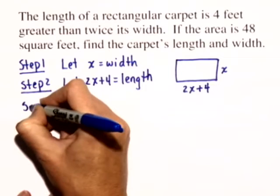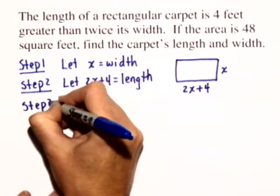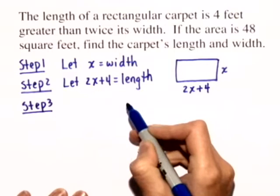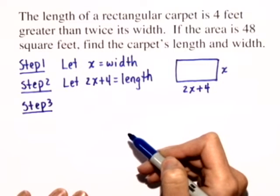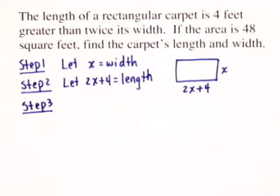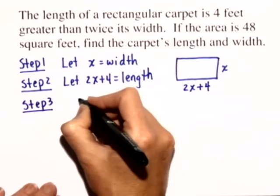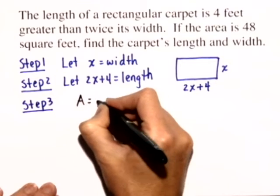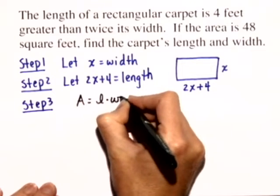Now in step 3, we want to write an equation relating these two quantities in steps 1 and 2. We're told that the area is 48 square feet. The area of any rectangle is equal to the length times the width.